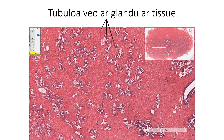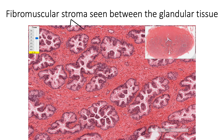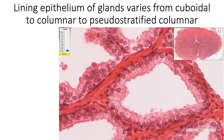Prostate is made up of 30 to 50 tubuloacinar glands, all of which open into the prostatic urethra. Between this glandular tissue we find fibromuscular stroma. The lining epithelium of these glands varies from simple cuboidal to simple columnar to pseudostratified columnar type.